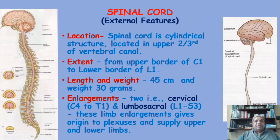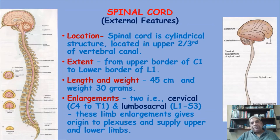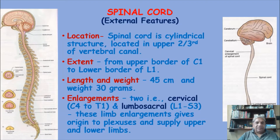This slide is showing you the spinal cord. The spinal cord is a cylindrical structure located in the upper two-thirds of the vertebral canal - that means it terminates at the lower border of the L1 vertebra. It begins at the upper border of the cervical one vertebra, where it is in continuation with the medulla, and terminates at the lower border of L1. The length of the spinal cord is about 43 to 45 centimeters and it weighs around 30 grams.